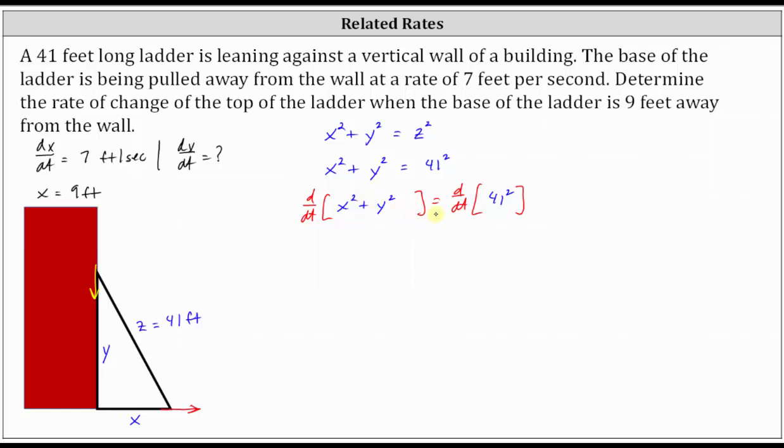On the left, because we're differentiating with respect to T and we have X and Y terms, we need to apply the chain rule. The derivative of X squared with respect to T is equal to two X times dx dt. Again, we're applying the chain rule here. Plus the derivative of Y squared with respect to T is two Y times dy dt.